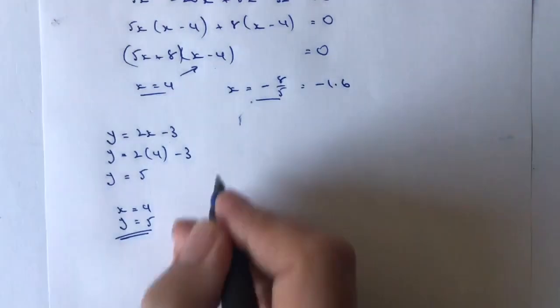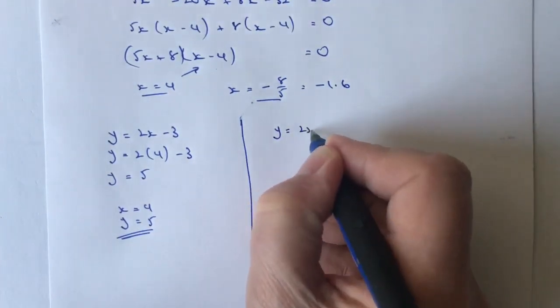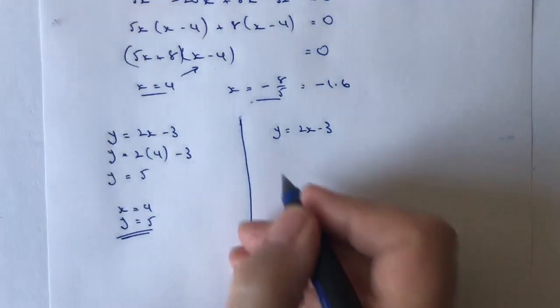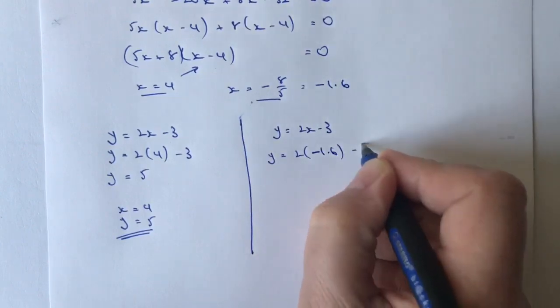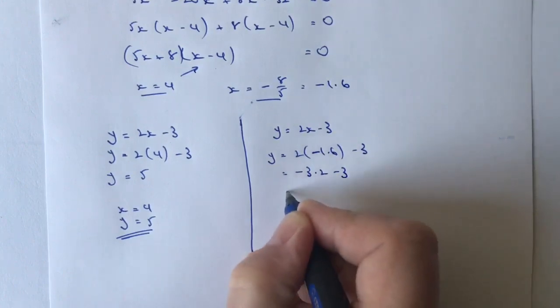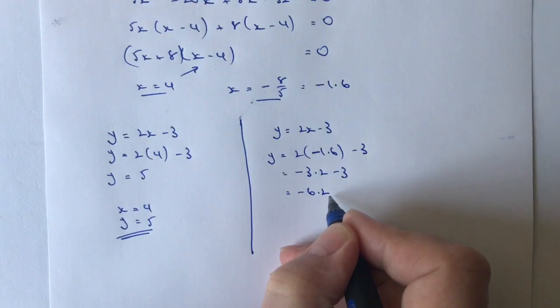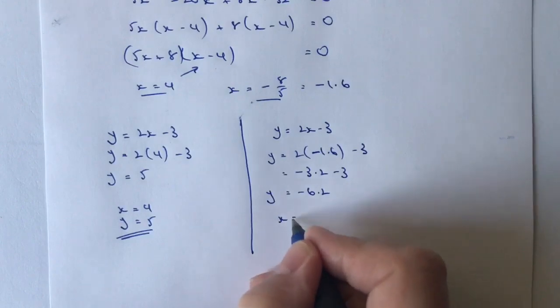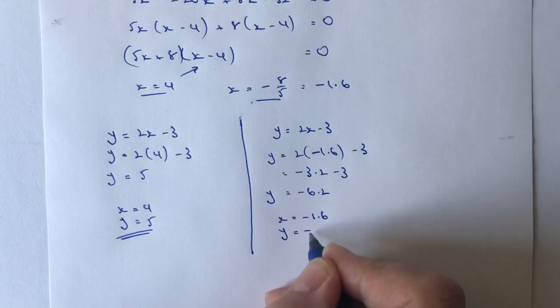Second two values, I'm going to use exactly the same. I'm going to say, well, I've got y equals 2x minus 3. And I'm going to plug this value of x in. So I'm going to say that y equals 2 times minus 1.6 minus 3, which is going to be minus 3.2 minus 3, which is going to give me minus 6.2. So now, y equals minus 6.2 when x equals minus 1.6. And that actually will answer the question.